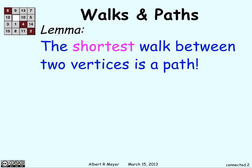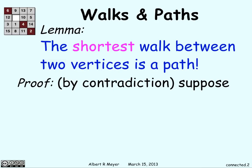We're going to start by showing that the shortest walk between two vertices is a path, and we're going to prove it by contradiction.